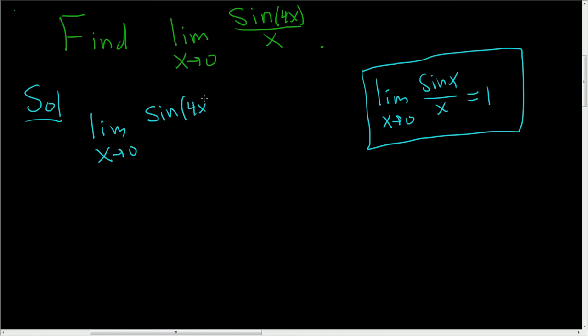This is sine of 4x over x. What we really want is it to be something like sine of x over x. We want these two to match. Here we have a 4x, but here we just have an x. What we do is just put a 4 there. Why? Because we can do that.